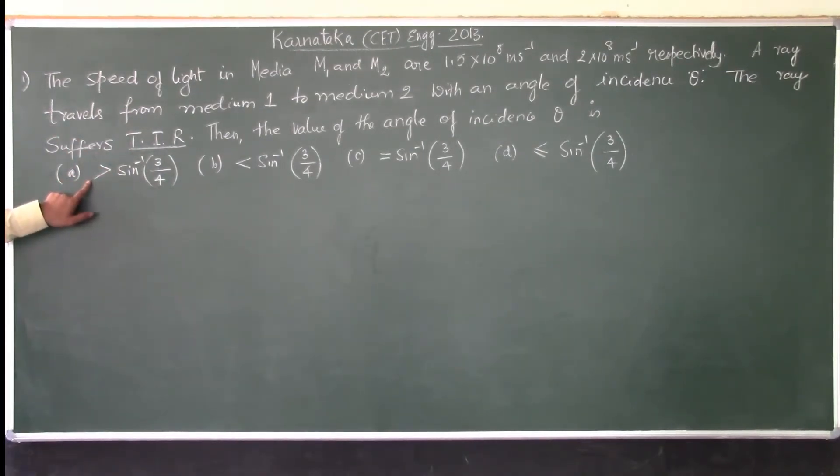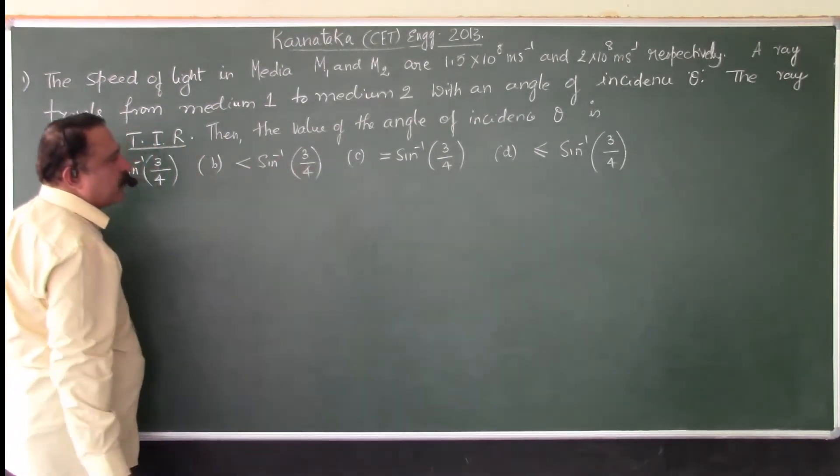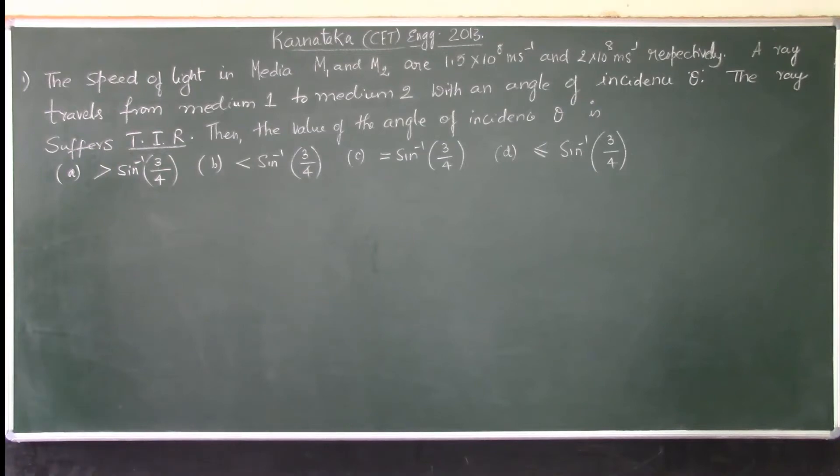Theta should be greater than sine inverse of 3 by 4. Second option is less than sine inverse of 3 by 4, equal to sine inverse of 3 by 4. The last option is less than or equal to sine inverse of 3 by 4.